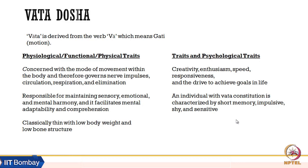If there is a vata imbalance, people will find it difficult to concentrate on one topic. Classically, people with prominent vata dosha have a thin body, low body weight, and low bone structure. Psychologically, these people are more creative, enthusiastic, fast, and responsive, with a special drive to achieve goals. However, individuals with a vata constitution are characterized by short memory, impulsiveness, shyness, and sensitivity, making them more easily distracted from one subject to another.